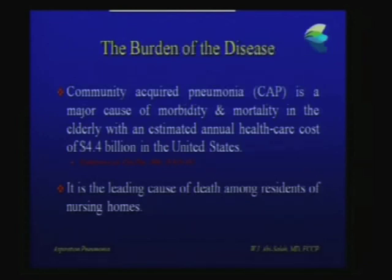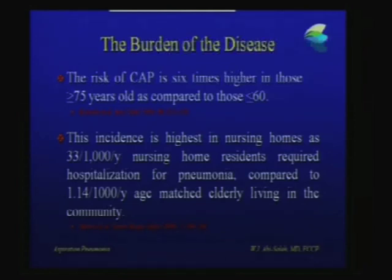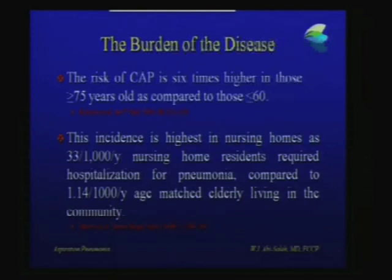It is actually the leading cause of death — residents of nursing homes often end up dying because of pneumonia. As you get older, your risk of pneumonia grows; it is six times higher if you're older than 75 than if you are younger than 60. The incidence is highest in nursing home residents at 33 per 1,000 residents per year hospitalized for pneumonia, compared to only 1 per 1,000 for age-matched elderly living in the community — 33 times more frequent in a nursing home environment.